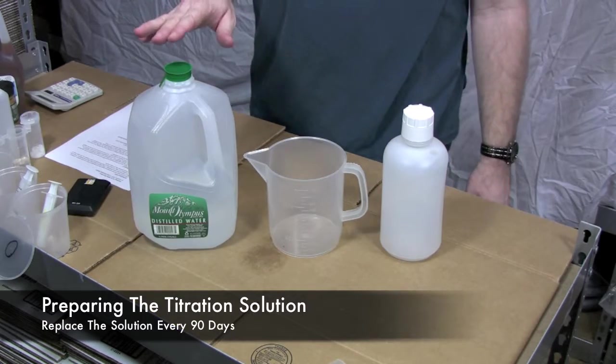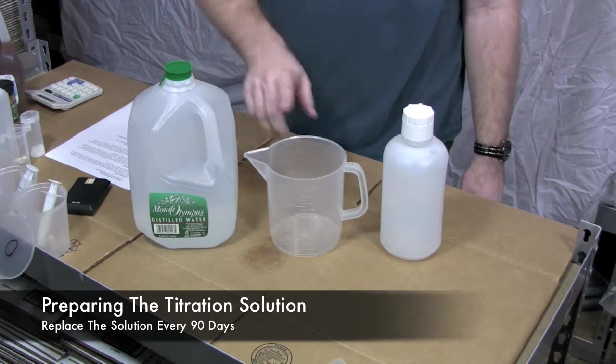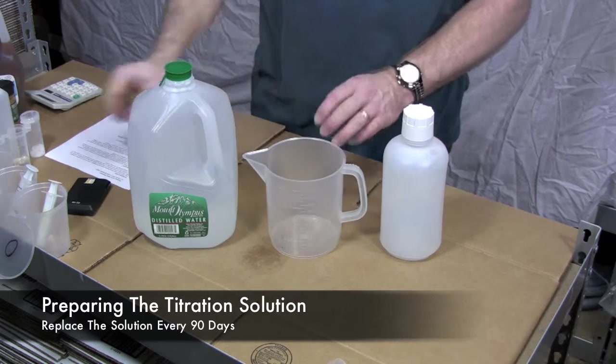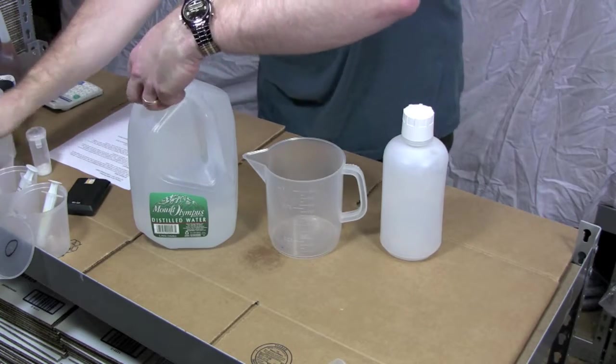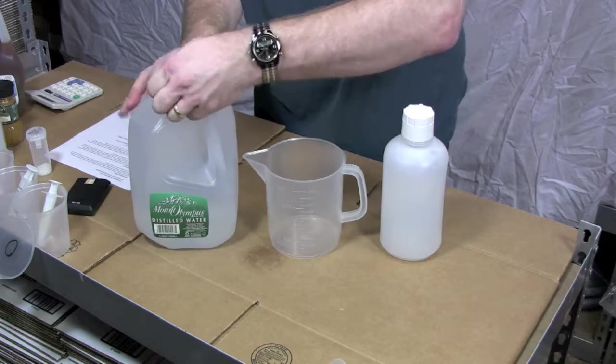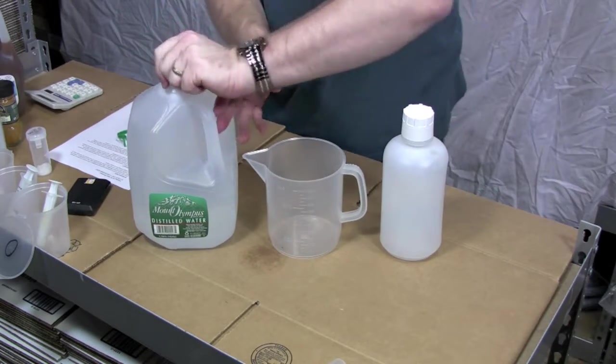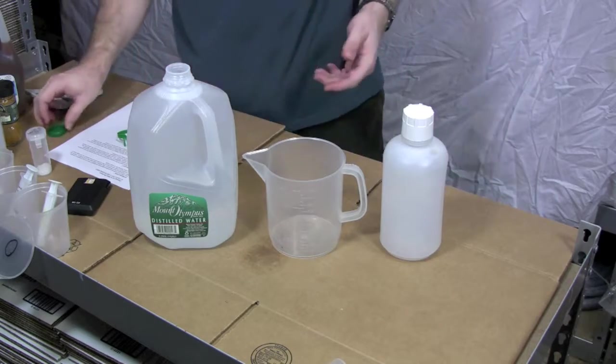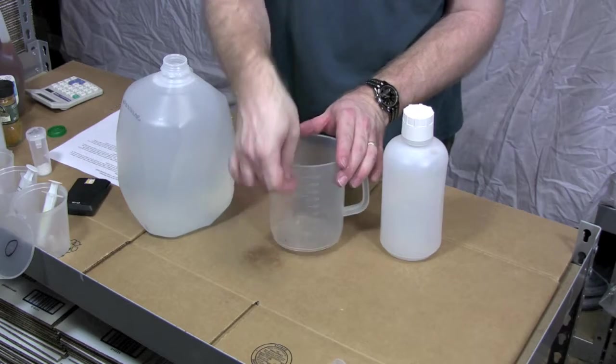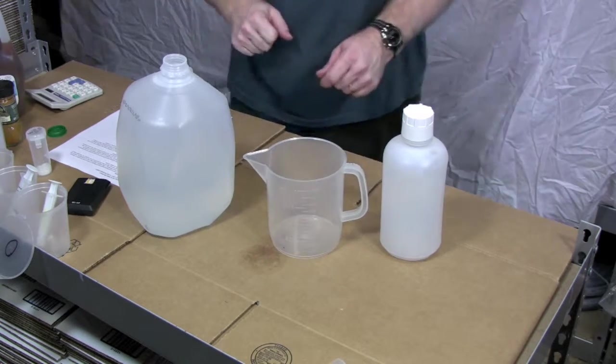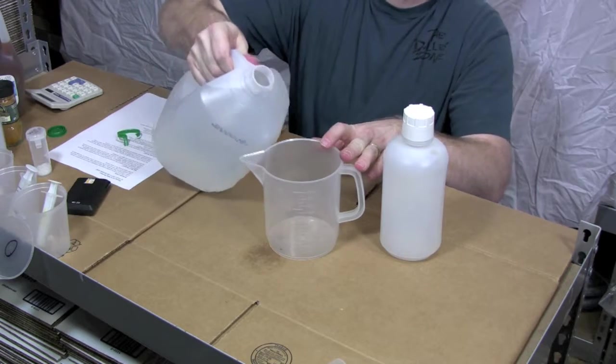The next step we're going to do is prepare a titration solution. To do that we need to measure out a liter of water into here and then we're going to measure out the catalyst. I have a very accurate measuring cup. You can purchase these on Utah Biodiesel Supply or you can go into most grocery stores and find anything that just has a liter marking on the side. But it's important that you fill it right to the liter mark.